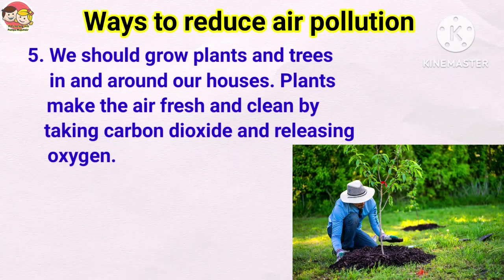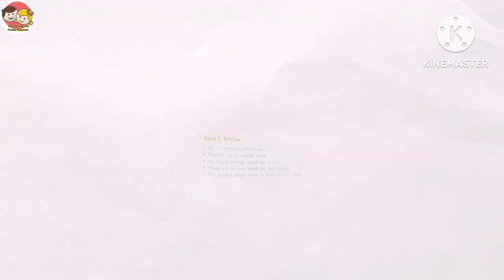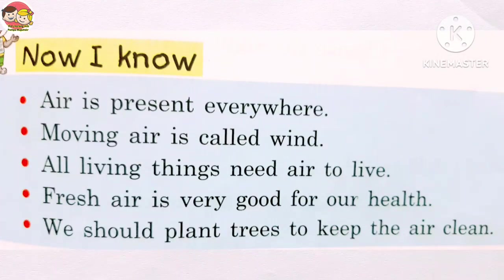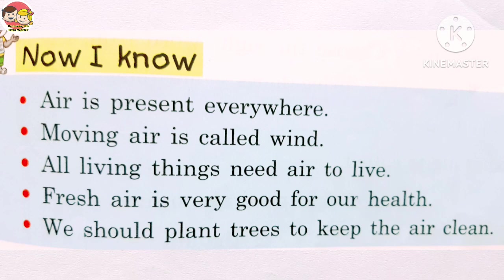Number five: we should grow plants and trees in and around our houses — plants make the air fresh and clean by taking in carbon dioxide and releasing oxygen. Recapitulation: Air is present everywhere. Moving air is called wind. All living things need air to live. Fresh air is very good for our health. We should plant trees to keep the air clean.